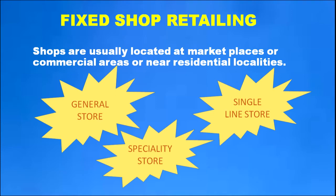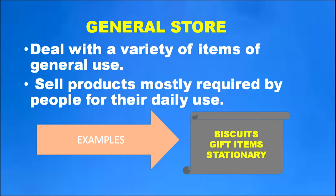Fixed shop retailing refers to shops located at marketplaces, commercial areas, or near residential localities. Under fixed shop retailing, we have three main types: general stores, specialty stores, and single line stores. General stores deal with a variety of items of general use and sell products mostly required by people for their daily use.